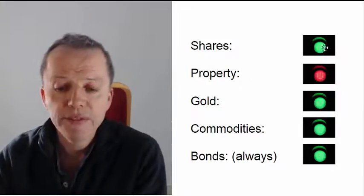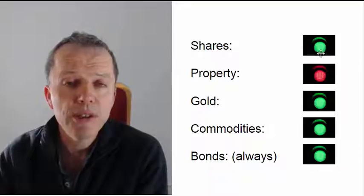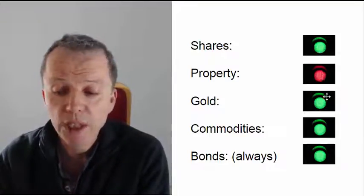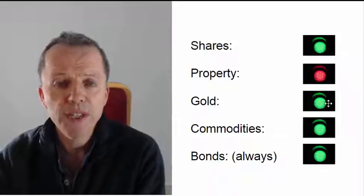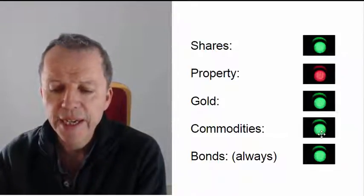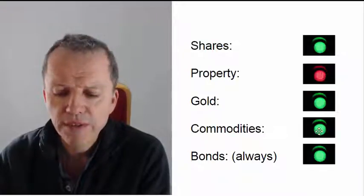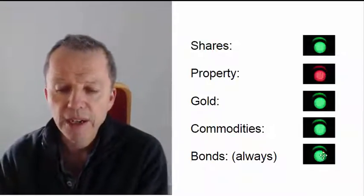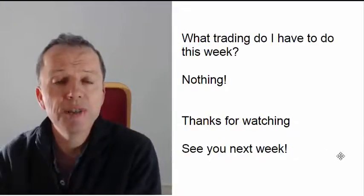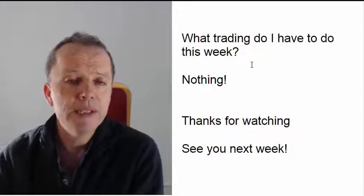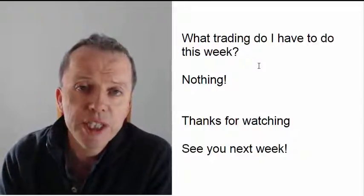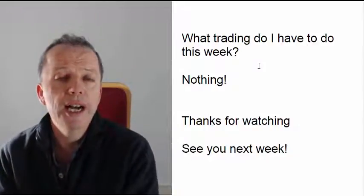So, what do I need to do this week? Shares: green light, staying invested. Property: no signal to buy yet, nothing to do. Gold: I had a signal last week to go long gold, so I've done that. Commodities: still green light, staying invested. Bonds: in my system I always stay invested, so that's a permanent green light. I don't have to do anything this week — no new signals, no signals to buy, no signals to sell.